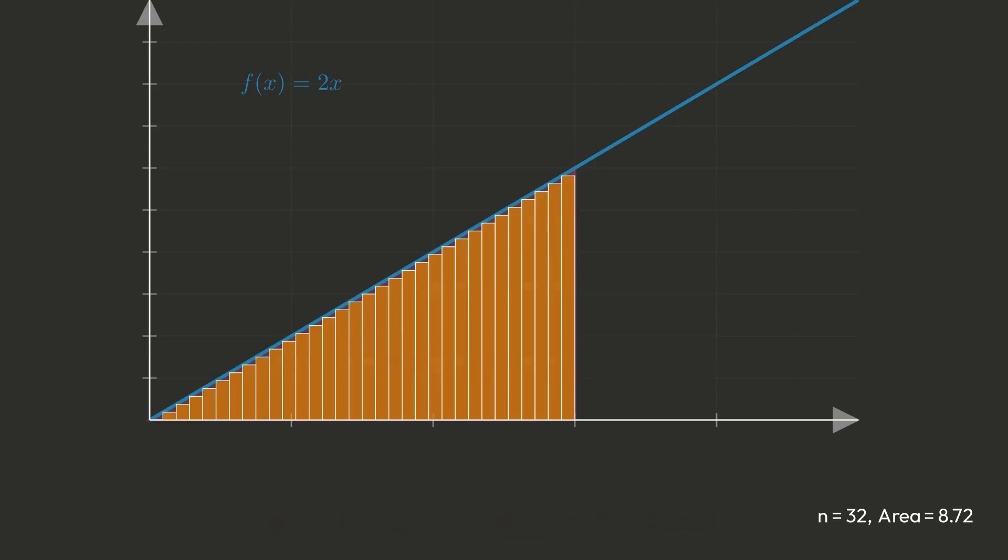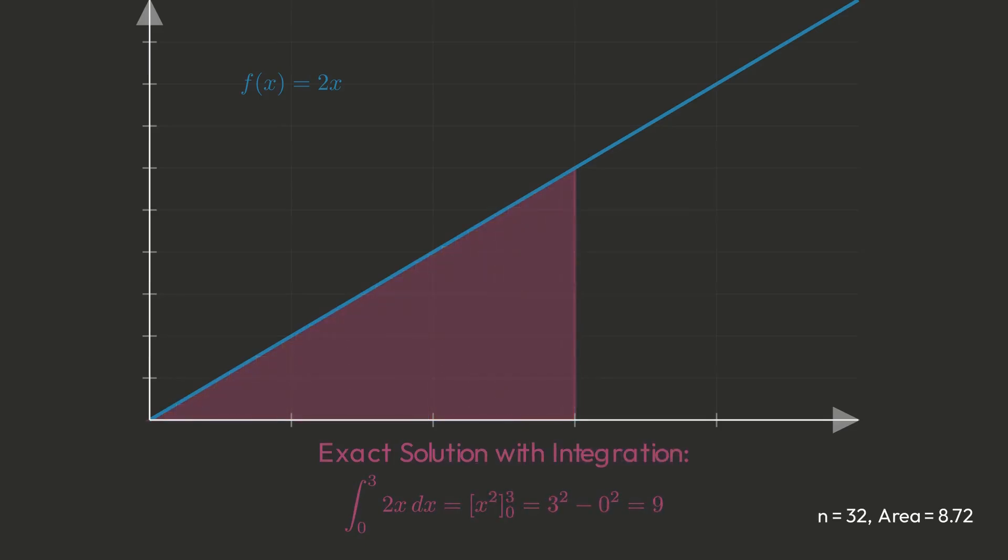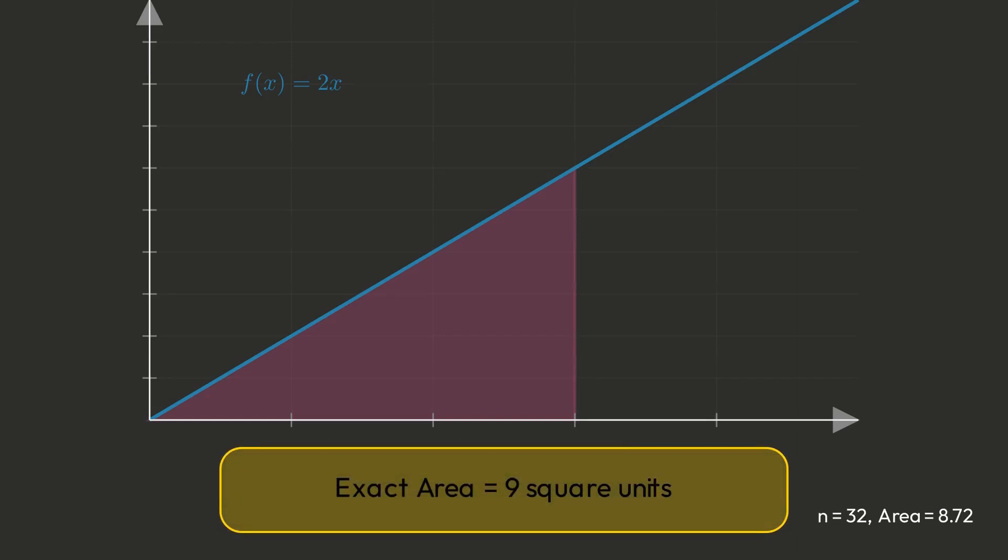Integration performs this limiting process automatically. The definite integral from 0 to 3 of 2x dx gives us the exact area. We can verify this geometrically. The area forms a triangle with base 3 and height 6. So area equals a half times 3 times 6 equals 9. The integration gave us the exact answer.